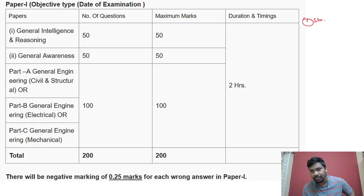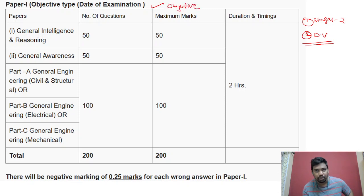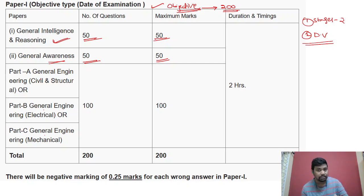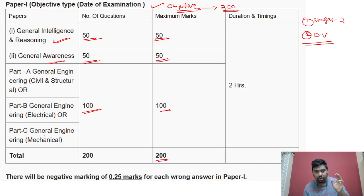There are two stages and document verification. Stage 1 is a purely objective type exam of 200 marks. First, general intelligence and reasoning — 50 marks, 50 questions. Next, general awareness — 50 questions, 50 marks. Next, respective discipline — civil, mechanical, or electrical — domain related, 100 questions, 100 marks. Total: 200 marks.